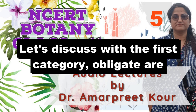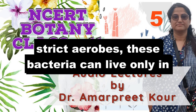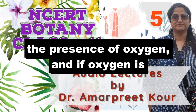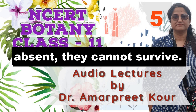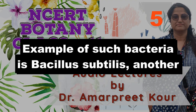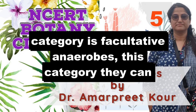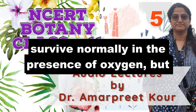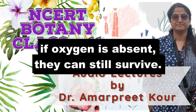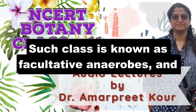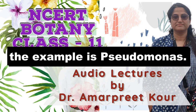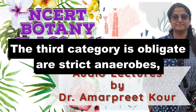The first category is obligate or strict aerobes. These bacteria can live only in the presence of oxygen; if oxygen is absent, they cannot survive. Example of such bacteria is Bacillus subtilis. Another category is facultative anaerobes — they can survive normally in the presence of oxygen, but if oxygen is absent, they can still survive. The example is Pseudomonas.